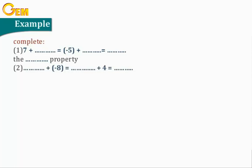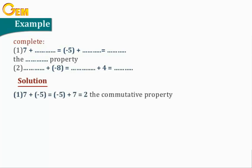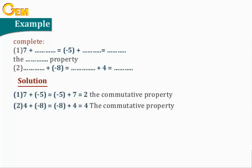Example — complete. Number 1: 7 plus negative 5 equals negative 5 plus 7 equals 2. The property is the commutative property. Number 2: 4 plus negative 8 equals negative 8 plus 4 equals 4. The property is the commutative property.